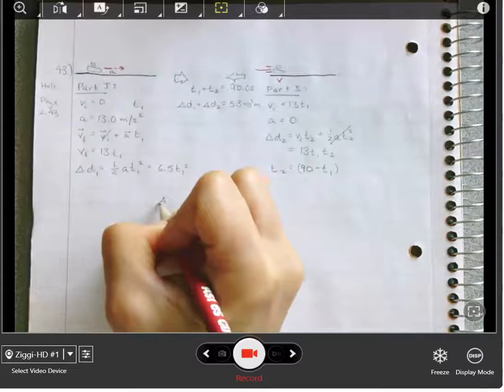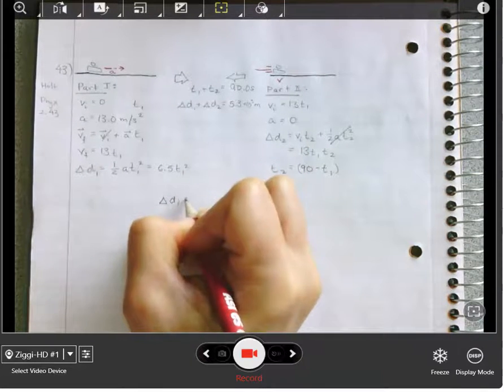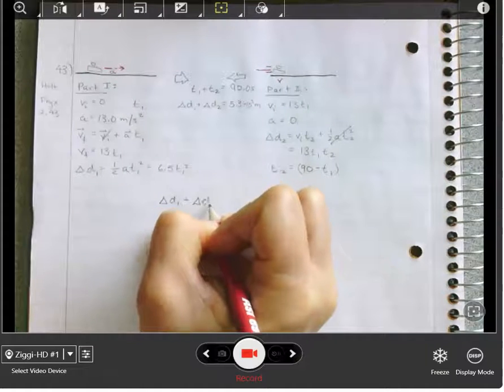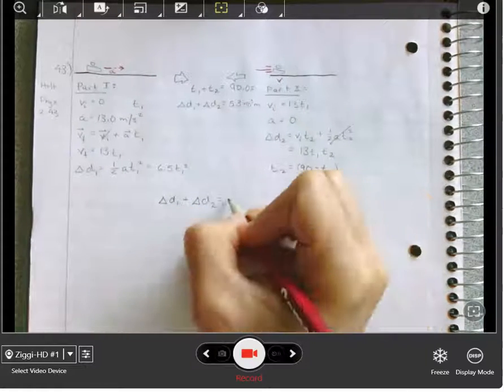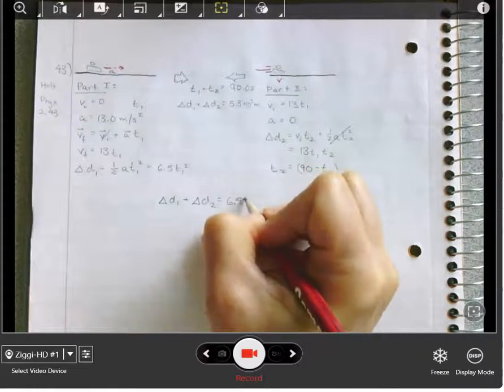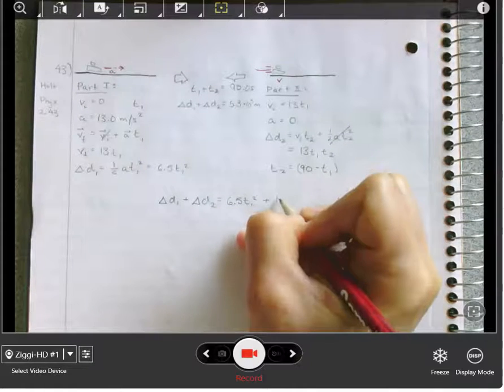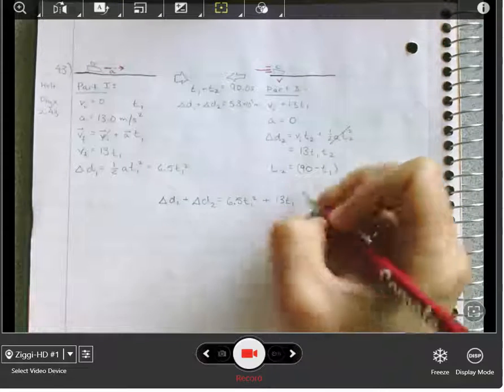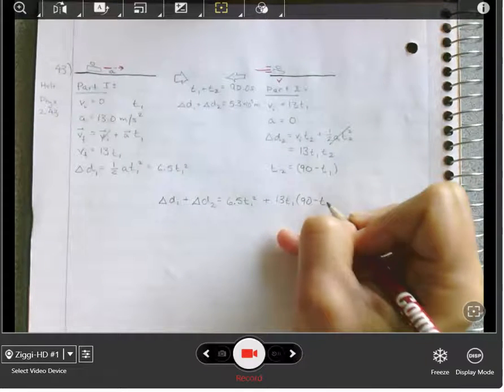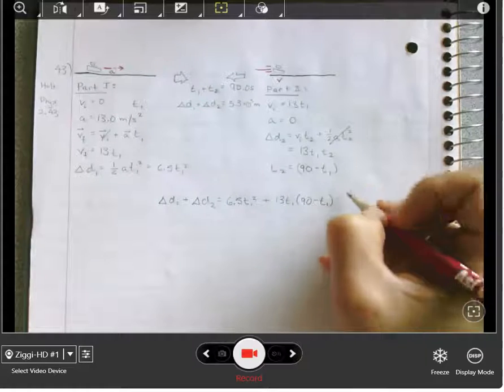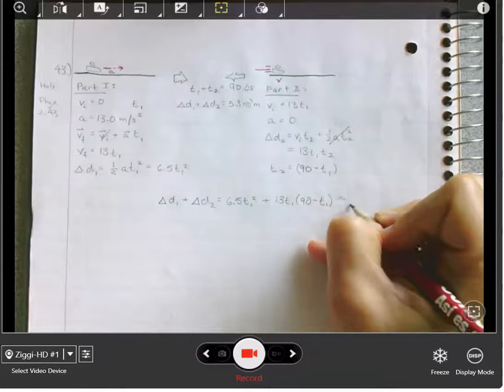Substitute this up here and we've got a nice merged equation. First leg of the journey. Second leg of the journey. Check in with the first one. Check in with the second one. And solve.